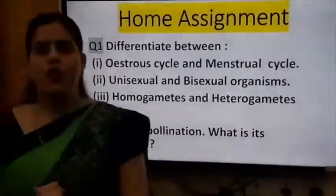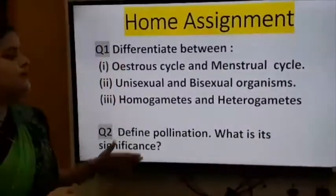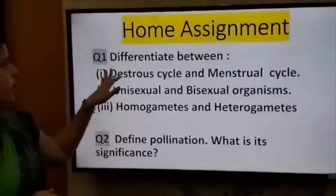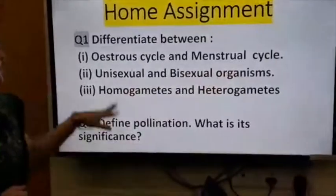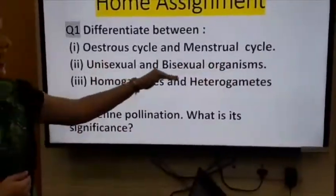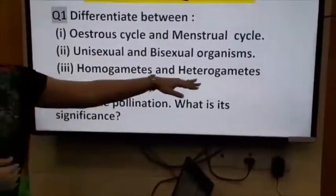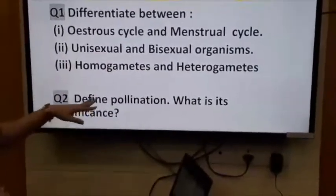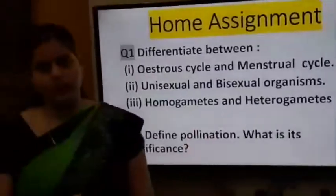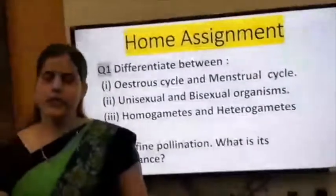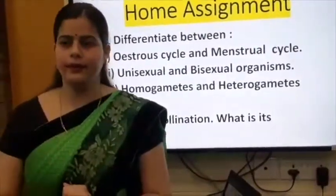For the home assignment, you have to complete the following: Question one — differentiate between oestrous cycle and menstrual cycle; differentiate between unisexual and bisexual organisms; differentiate between homogametes and heterogametes. Question two — define pollination and explain its significance. We will meet in the next lecture. Thank you.